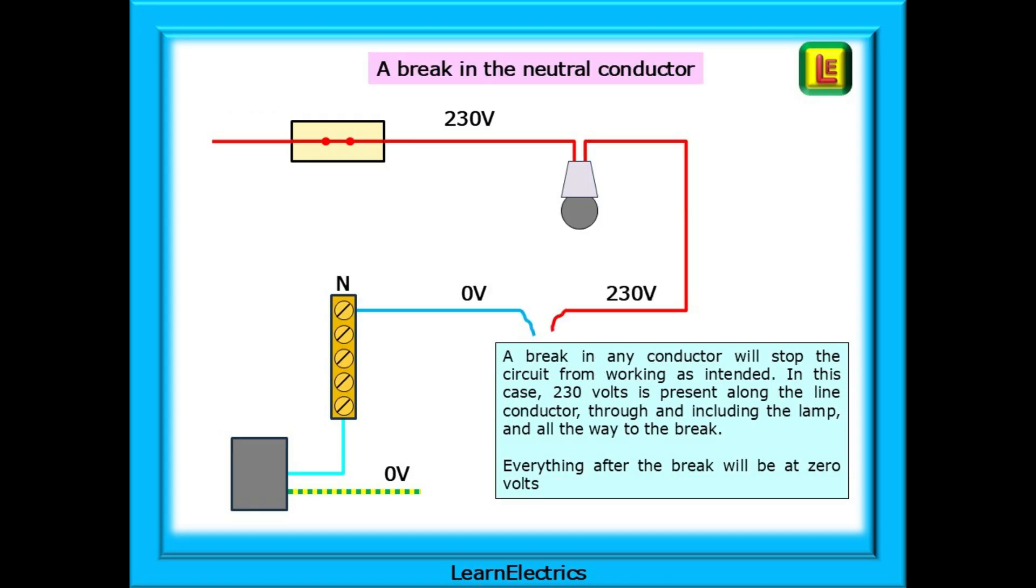A brake in the wiring will stop the lamp from functioning for the same reasons. A brake in any conductor will stop the circuit from working as intended. In this case, 230 volts is present along the line conductor, through and including the lamp and all the way to the brake. Everything after the brake will be at 0 volts. If there is no route to earth, then everything before the brake would be at 230 volts or line voltage.